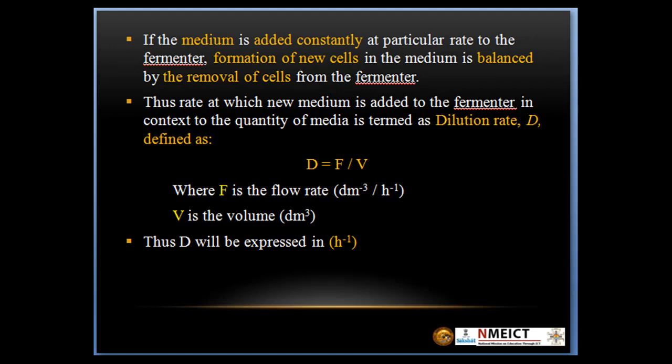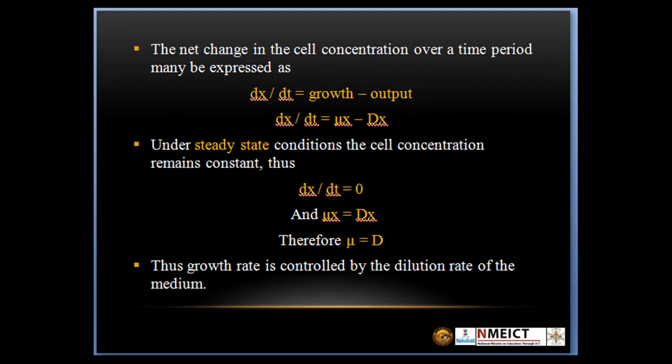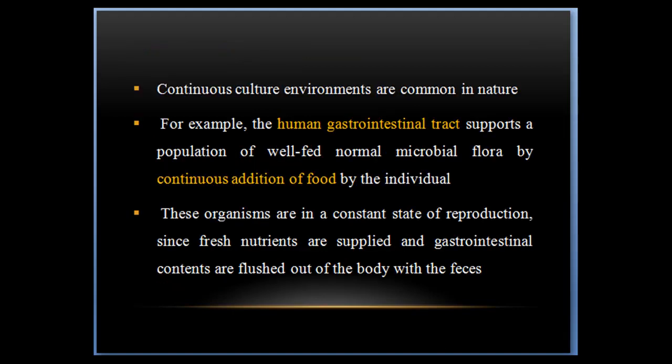Thus, this will be expressed in h⁻¹. The net change in the cell concentration over a time period may be expressed as dx/dt = growth minus output, so dx/dt = μx - Dx. Under steady state condition, the cell concentration remains constant, and thus growth rate is controlled by the dilution rate of the medium.